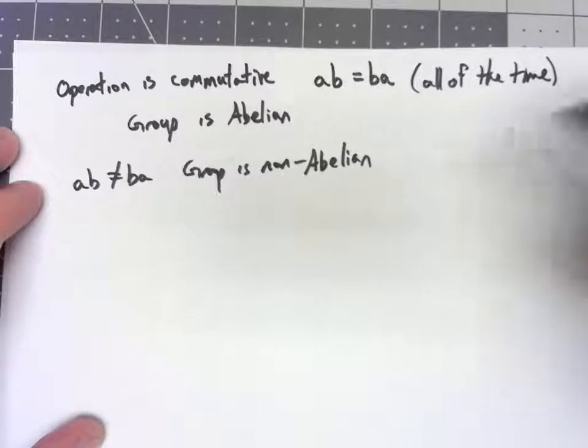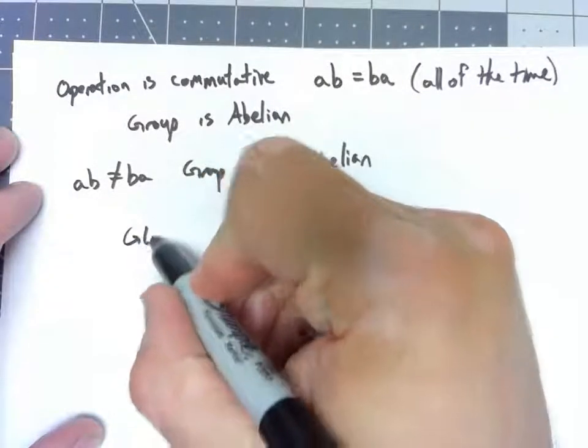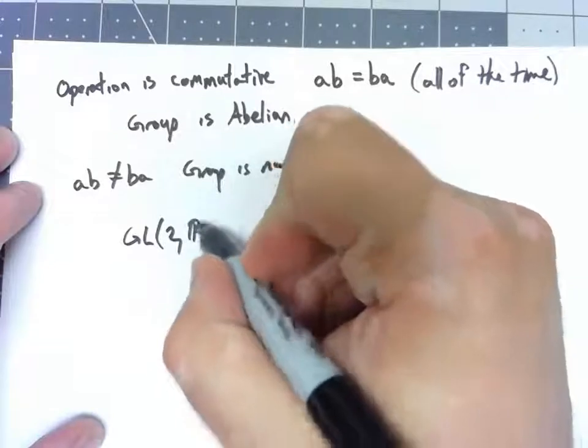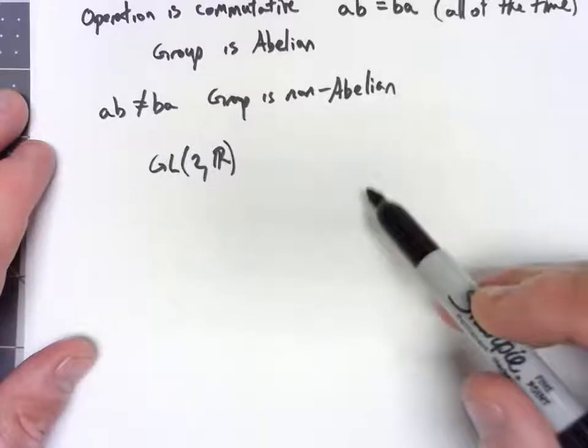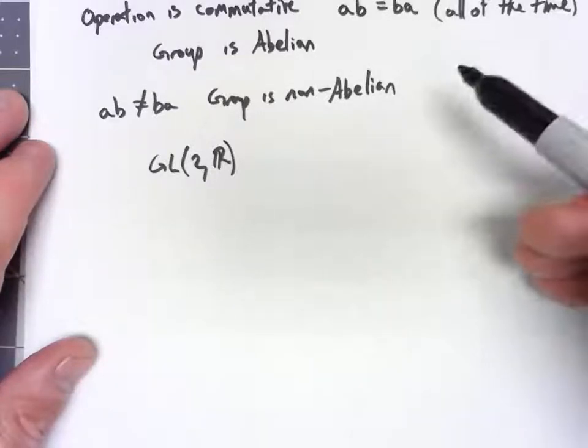The group of the last video, GL(2,R), is a very important example of a non-abelian group. Matrix multiplication is not commutative.